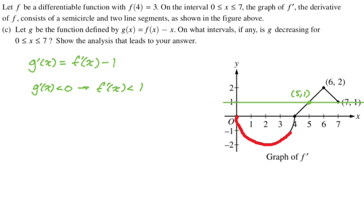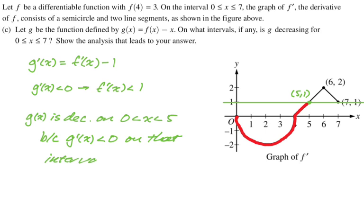This intersection point is 5, 1. And until I get to that intersection point, f prime is below 1. So that's the region on which g is decreasing. So now I'm just going to write that up. I'm going to say that g is decreasing on the interval from 0 to 5. And then my reasoning for that is going to be because g prime is less than 0 on that interval. So I did the analysis, though. You can see I showed g prime is less than 0 implies that f prime is less than 1. That's my reasoning there.